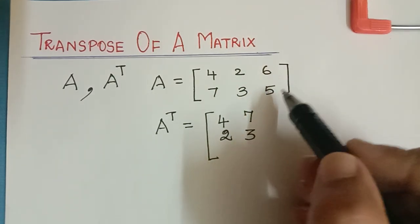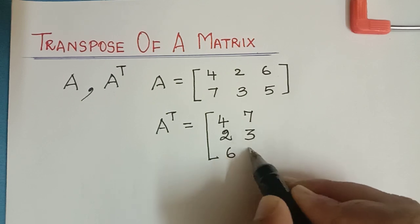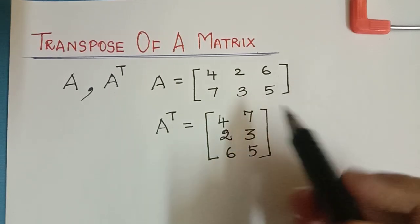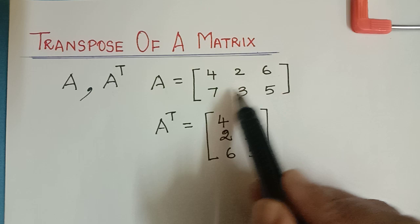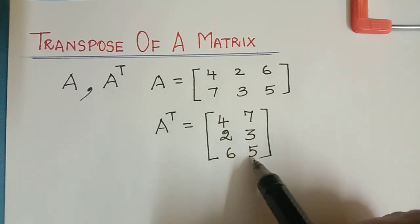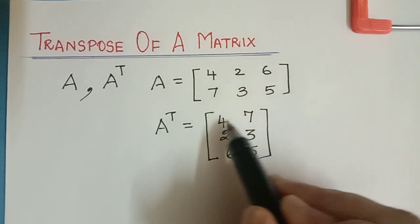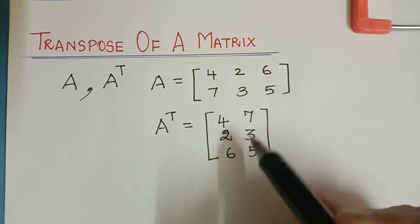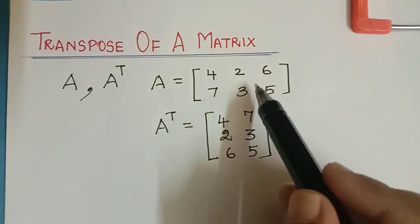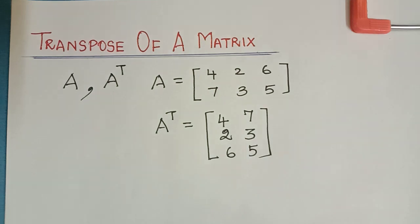And this third column changes as third row for the transpose matrix. So if we see here, the rows are turned into columns and columns are turned into rows. So such a matrix is called the transpose.